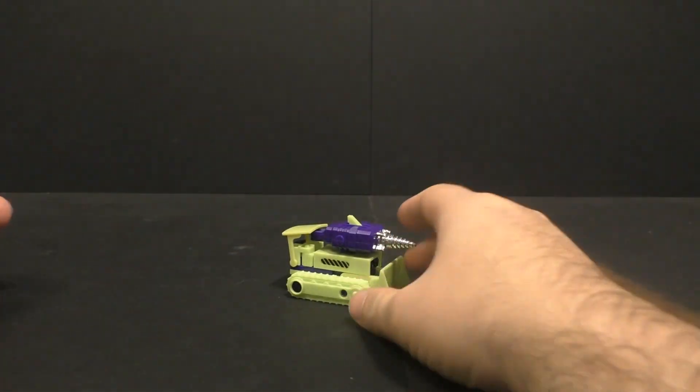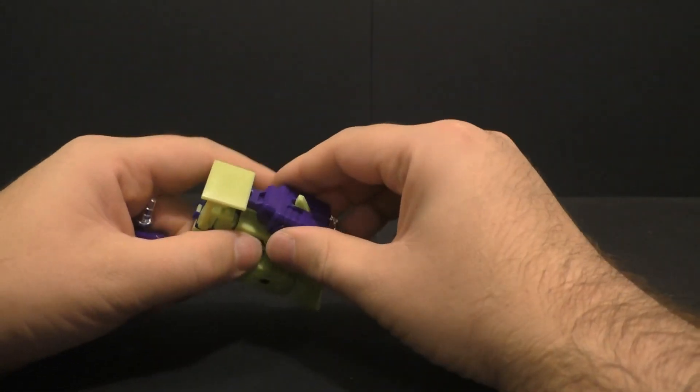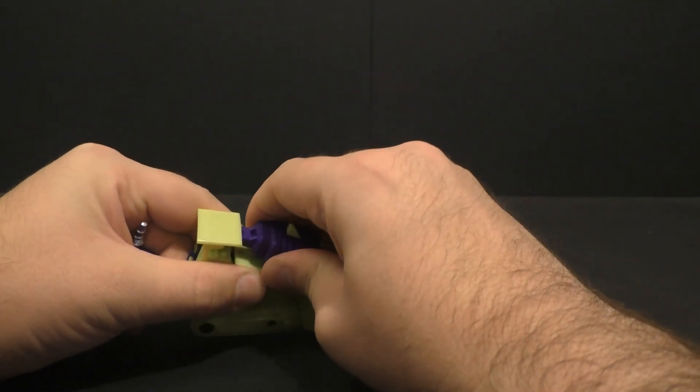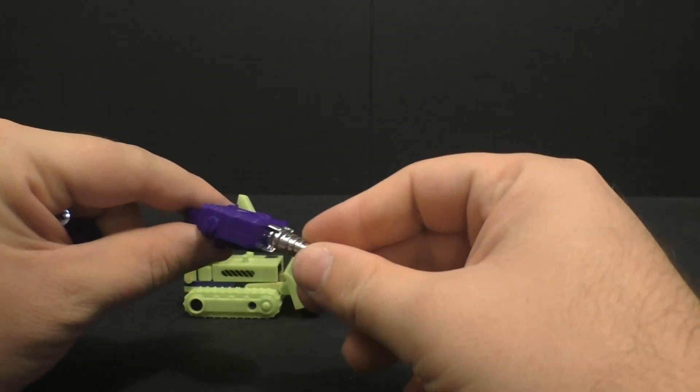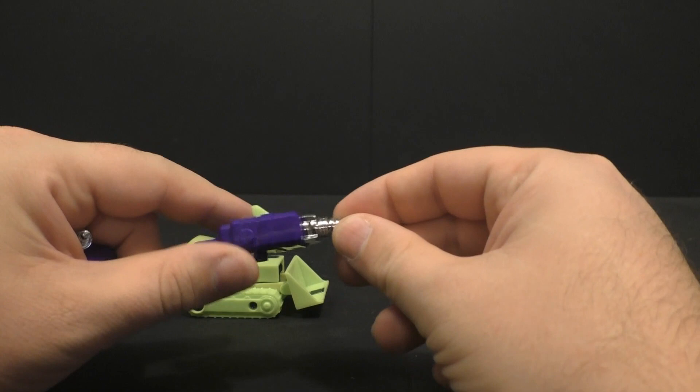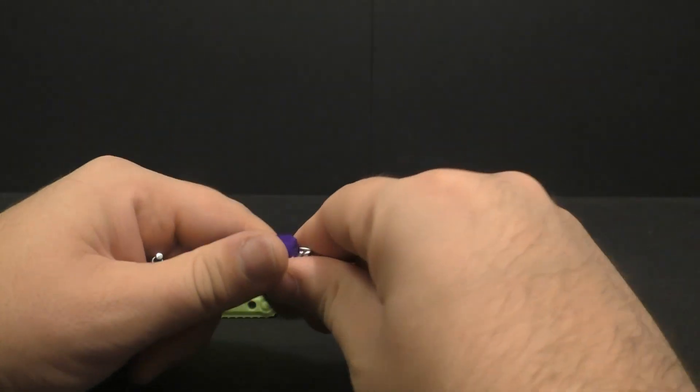So here he is in his vehicle mode. As you see, he's just that front end loader. Nothing spectacular to go about here. He does have this bit which becomes the forearm for Devastator which has got the little drill thing so it's got like the attack ability or whatever.